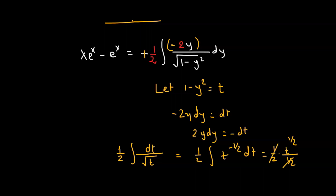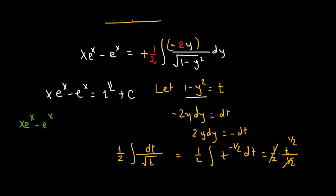So we get x e raised to the power of x minus e raised to the power of x on the left hand side, and that equals t raised to the power of half plus the constant of integration c. Replacing t with our assumed value 1 minus y squared, we finally get x e raised to the power of x minus e raised to the power of x equals square root of 1 minus y squared plus the constant of integration c. And this is the required solution to the given differential equation.